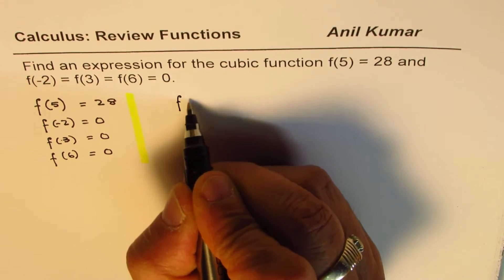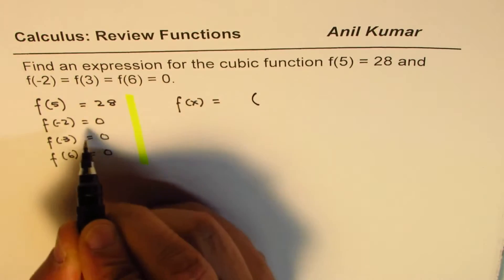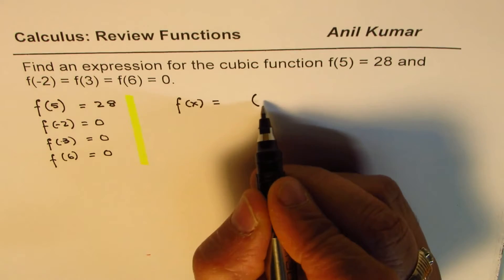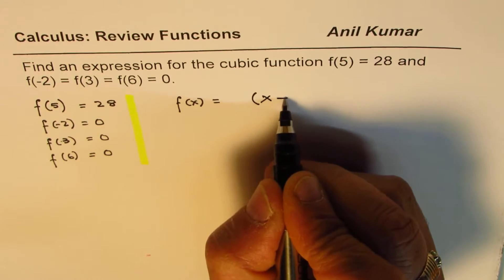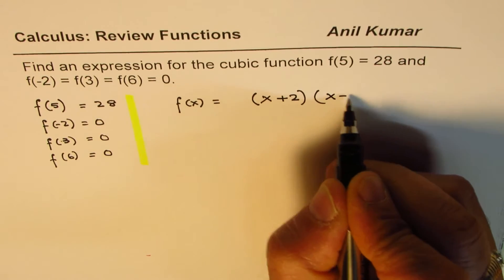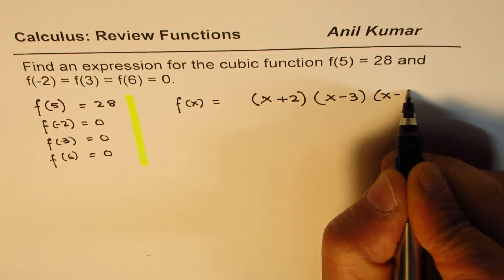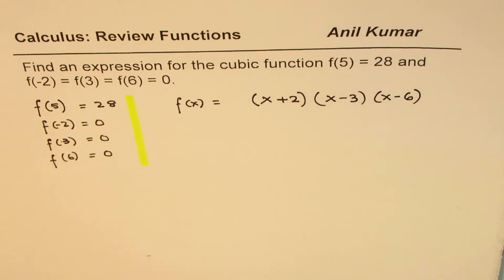So we can write this function as f(x) equals... leave some space here, and then I'll say x minus this value of zero. So x minus minus 2 makes it plus. Do you see that? Times the other one, which is x minus 3, then this one, which is x minus 6. Now, can you tell me why I leave this space?